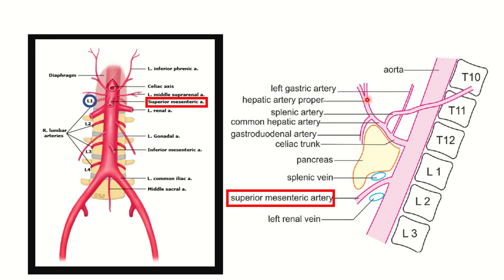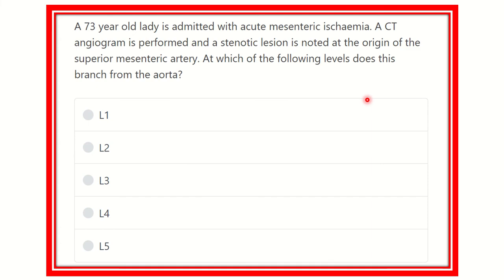Hello everyone, welcome to another question and answer session for the MRCS exam. Here is the question: a 73-year-old lady is admitted with acute mesenteric ischemia. A CT angiogram is performed and a stenotic lesion is noted at the origin of the superior mesenteric artery.